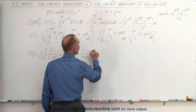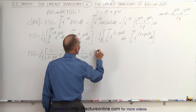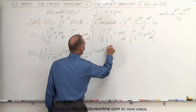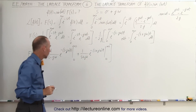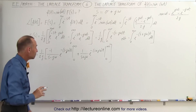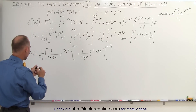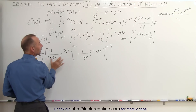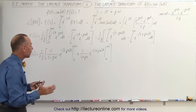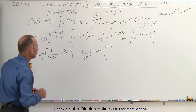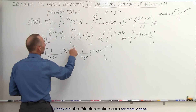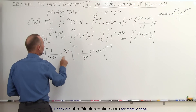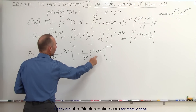Minus 1 over s plus j omega, times e to the minus s plus j omega times t, evaluated from 0 to infinity. Let's take a quick check: we have a minus, and minus times minus is plus. We have s minus j omega and s plus j omega — looks good. When we plug in the limits, plugging in infinity gives 0, and plugging in 0 gives e to the 0 which is 1, so that's 0 minus 1. The same applies to the second term: 0 minus 1.